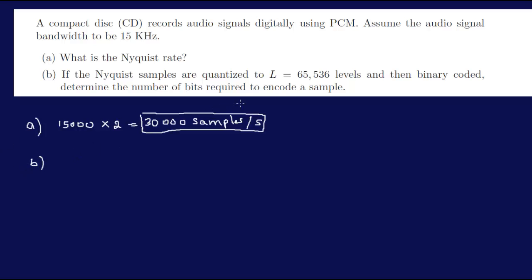Now over here, question B, they give you the quantization level and they ask you to find the number of bits. Now, still on page 205, we have Q is equal to 2 to the power of N.